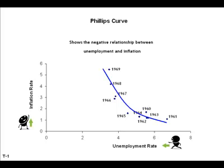Policymakers saw this relationship as a menu of inflation choices. They thought that they could choose to have low unemployment at the expense of a little bit of inflation.